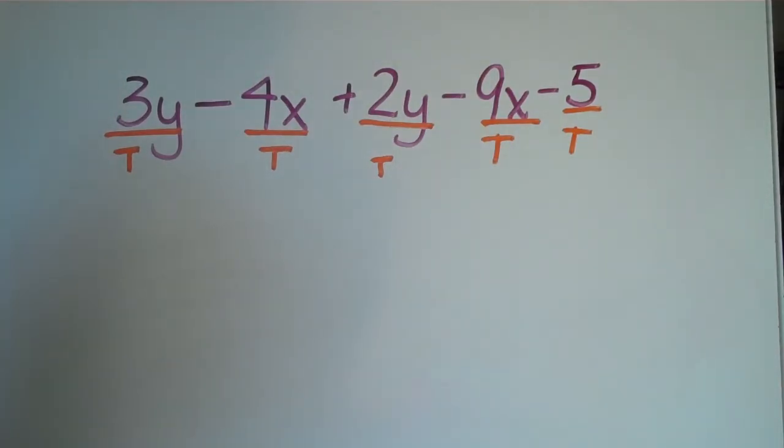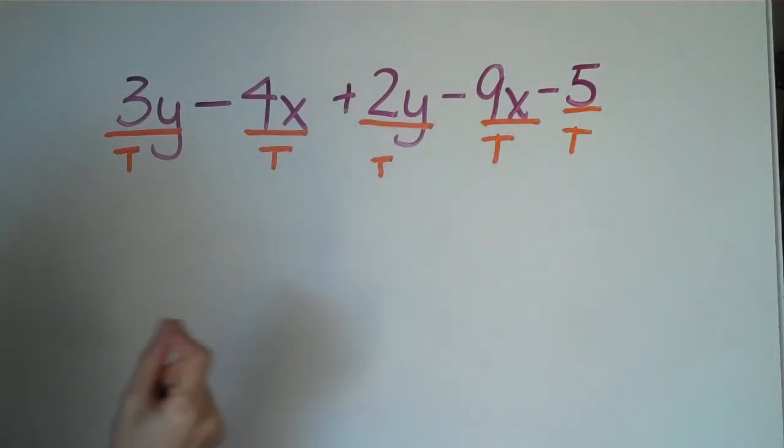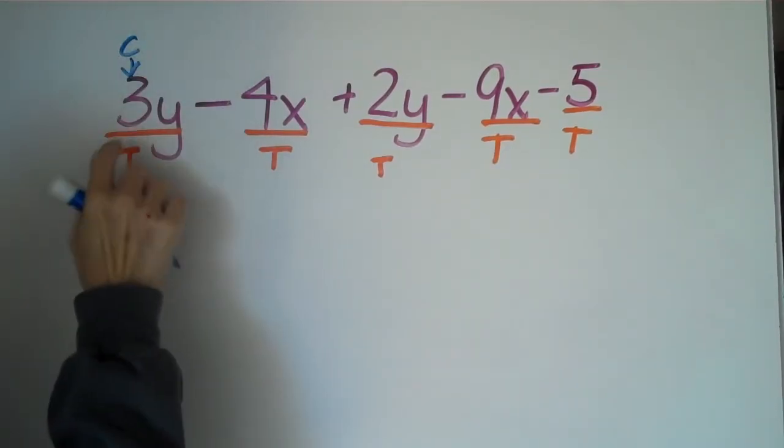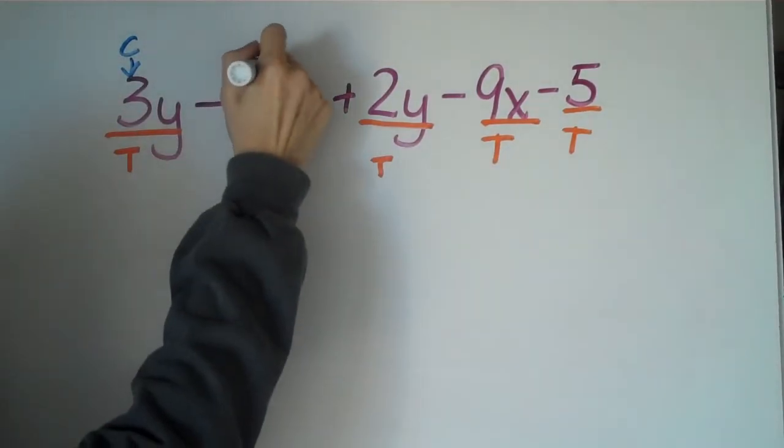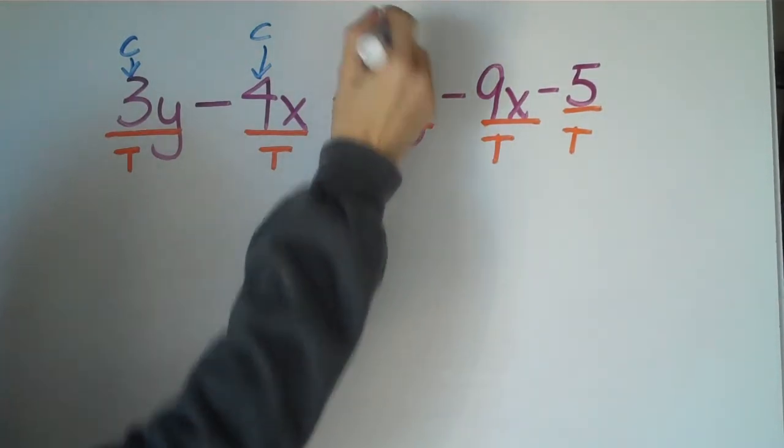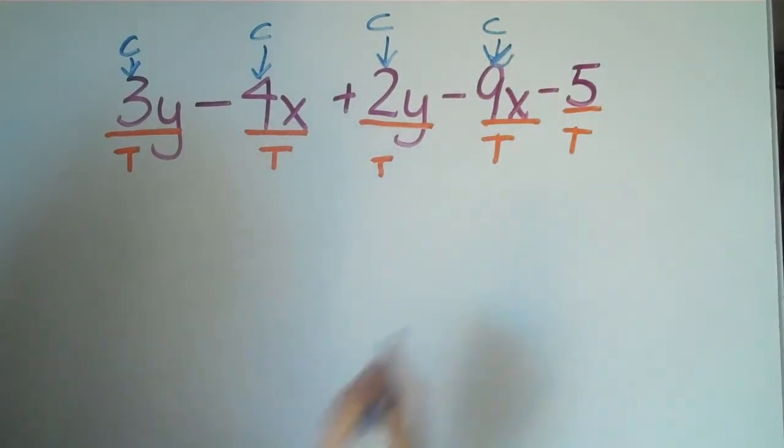Okay, where are our coefficients? The coefficients are in that partnership, right? They work, they co-operate with somebody else. 3y, 4x, these are all the numbers and variables together. The coefficient is always that first number. So 3 is a coefficient, 4 is a coefficient, 2 is a coefficient, 9 is a coefficient, and that's it. So we have four coefficients.